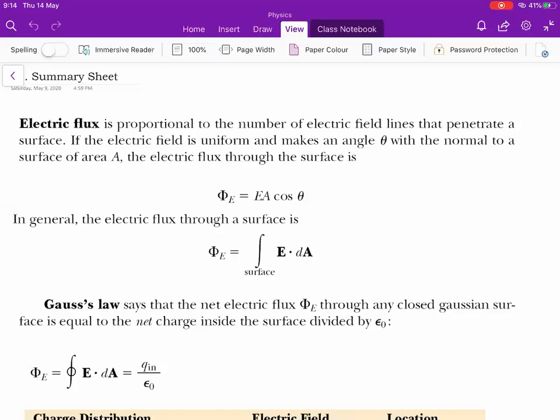We defined what electric flux is. Electric flux is a measure of the number of field lines that are crossing a given area. The fundamental formula for electric flux is E·dA.